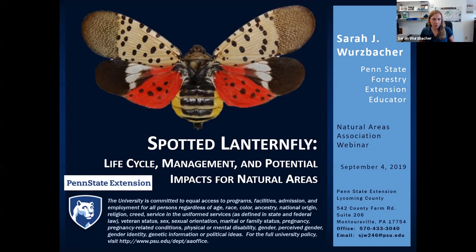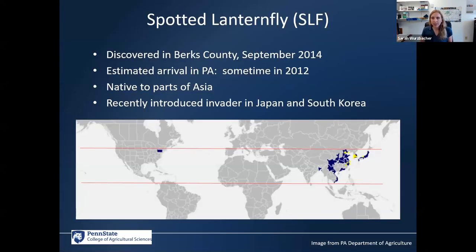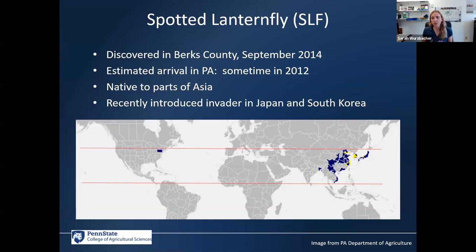Based on what you've said in the chat pod, most of you have some familiarity with this insect, so hopefully I can reinforce some of what you know and introduce a few new concepts. Spotted lanternfly is a new invasive insect. It was first discovered in Berks County, Pennsylvania in 2014, but based on the condition of some of the egg masses found there, it likely arrived sometime in 2012. It's native to parts of Asia and is currently acting as an invasive species in Japan and South Korea as well. A lot of the early information for Pennsylvania's response came from the Korean literature.